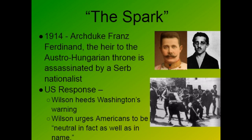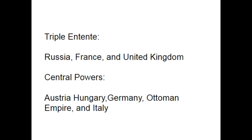Russia comes to the aid of Serbia, and Germany comes to the aid of Austria-Hungary. Quickly, all of Europe is at war. The Triple Entente is made up of Russia, France, and the United Kingdom, with other nations like Serbia and Romania involved. The Central Powers are Austria-Hungary, Germany, the Ottoman Empire, and Italy, with other nations like Bulgaria also involved.